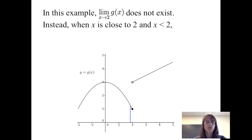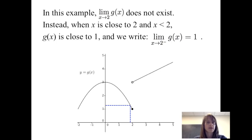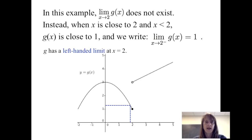Instead, we can look at what happens when x is close to 2 and x is less than 2. From a number line perspective, we're approaching 2 from the left. When x is close to 2 and x is less than 2, g of x is close to 1. We write that the limit of g of x as x approaches 2 from the left, denoted with that little negative sign, is equal to 1. We say that g has a left-handed limit at x equals 2.